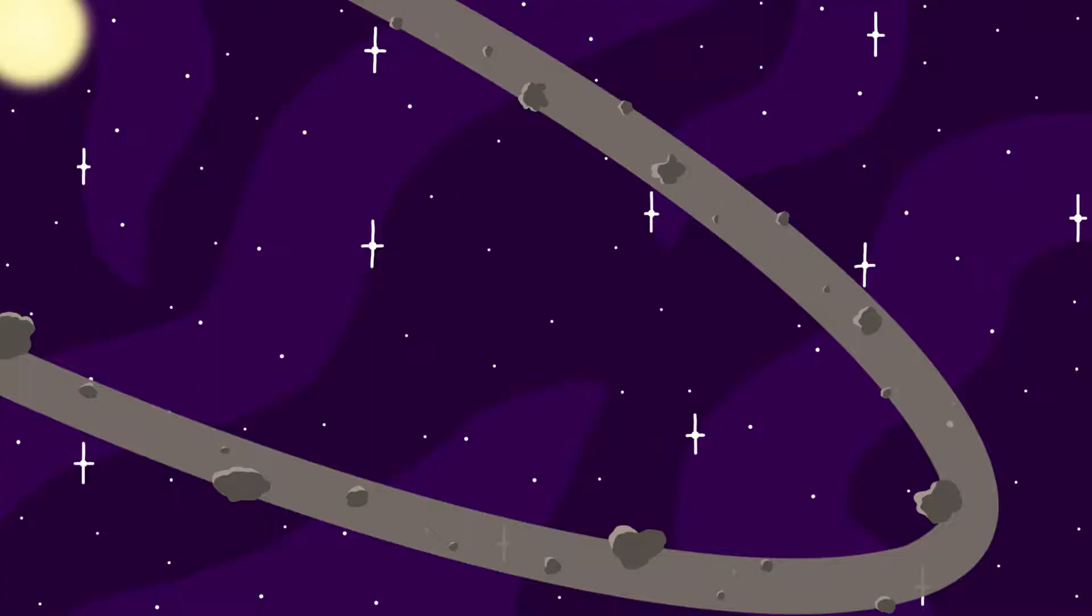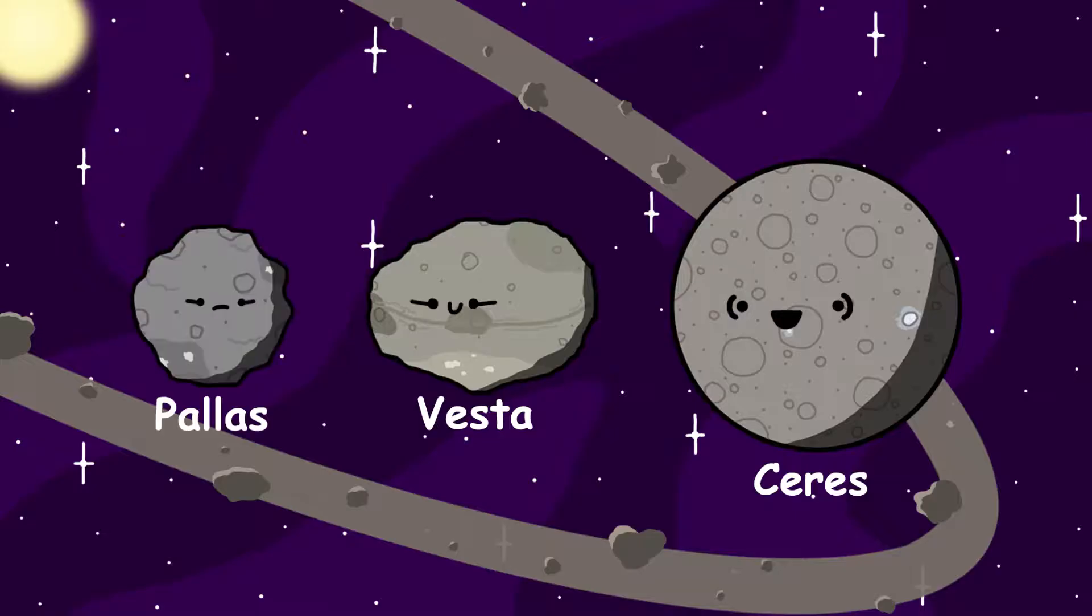Beyond Mars' orbit, we have the asteroid belt. The asteroid belt is a collection of debris left over from making the inner planets. In the asteroid belt, there are asteroids and protoplanets such as Ceres, Vesta, and Pallas.